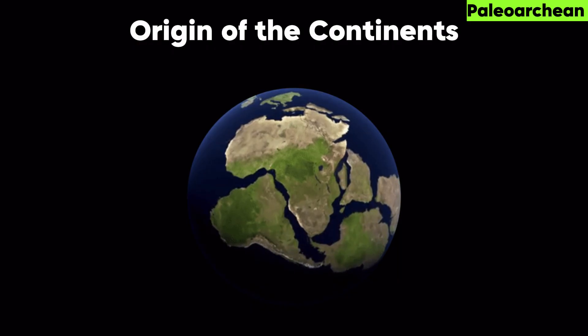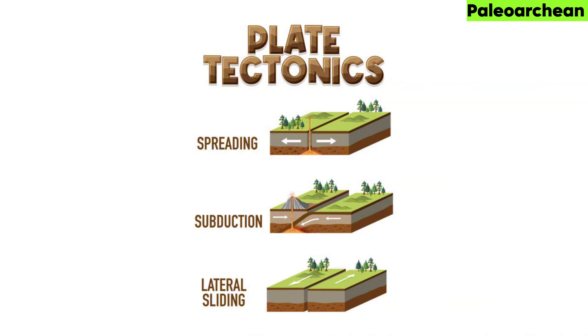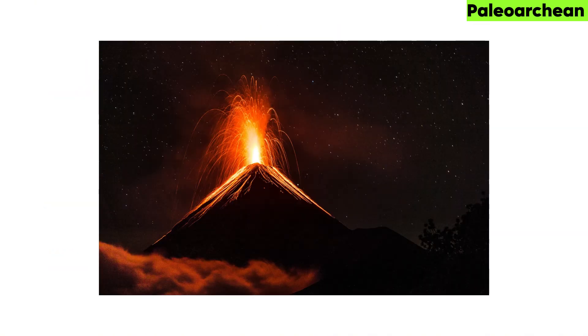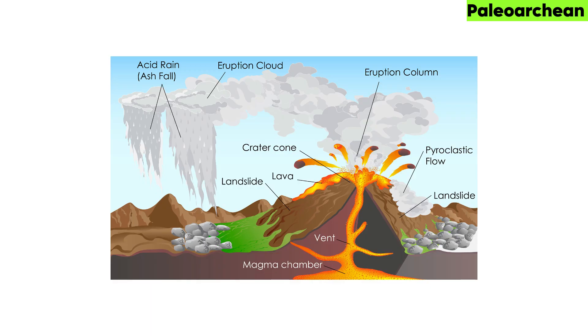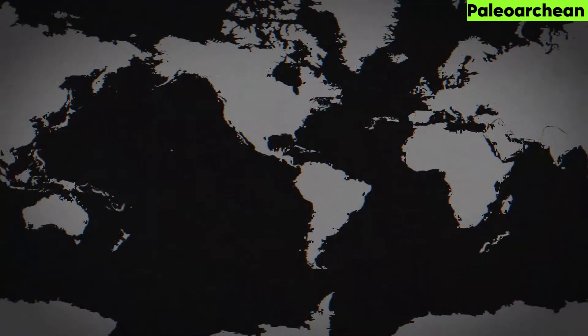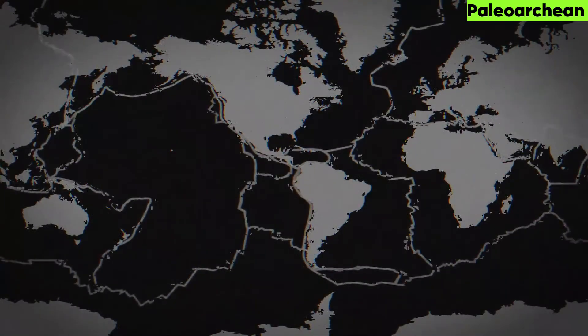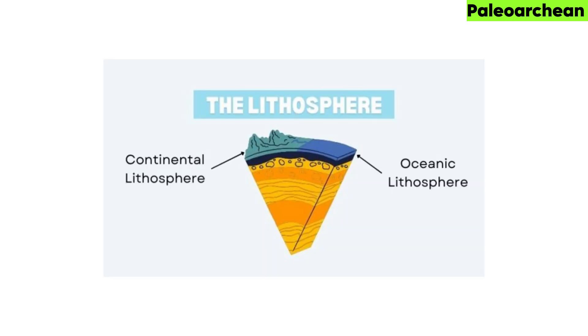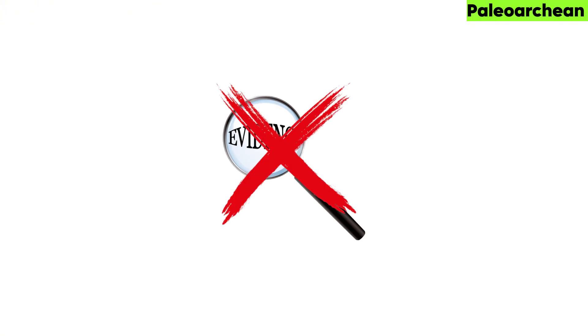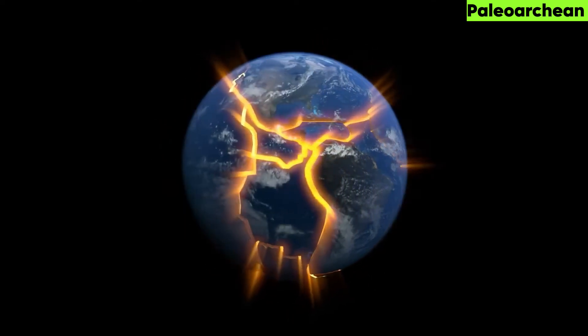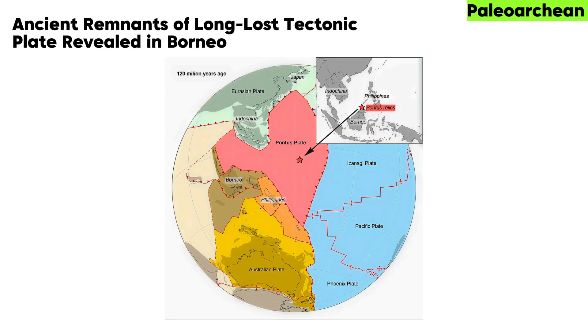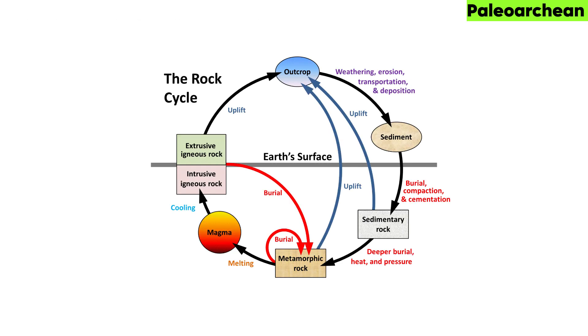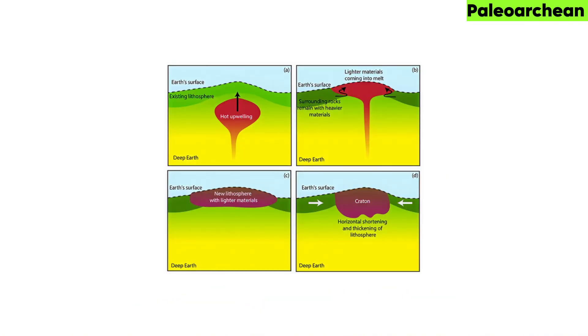Origin of the continents: in order for plate tectonics to work as it does currently, it necessarily must have continents. Volcanic action must have brought the first continental material to the Earth's surface in the Hadean Eon, 4.4 billion years ago. The first solid evidence of modern plate tectonics is found at the end of the Archean, indicating at least some continental lithosphere must have been in place. Remnants of earlier tectonic activity could have been erased by the rock cycle.